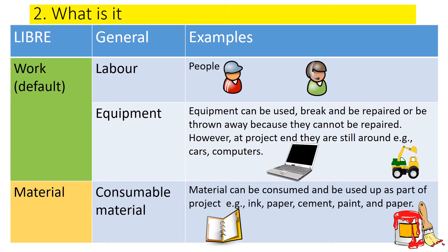The second type of resource in Project Libre is material, understood as consumable material. This type of consumable material can be used up during the project and as part of the project — in fact, they must be used up — like ink, paper, cement, paint. Those are things that are consumed, that are used.